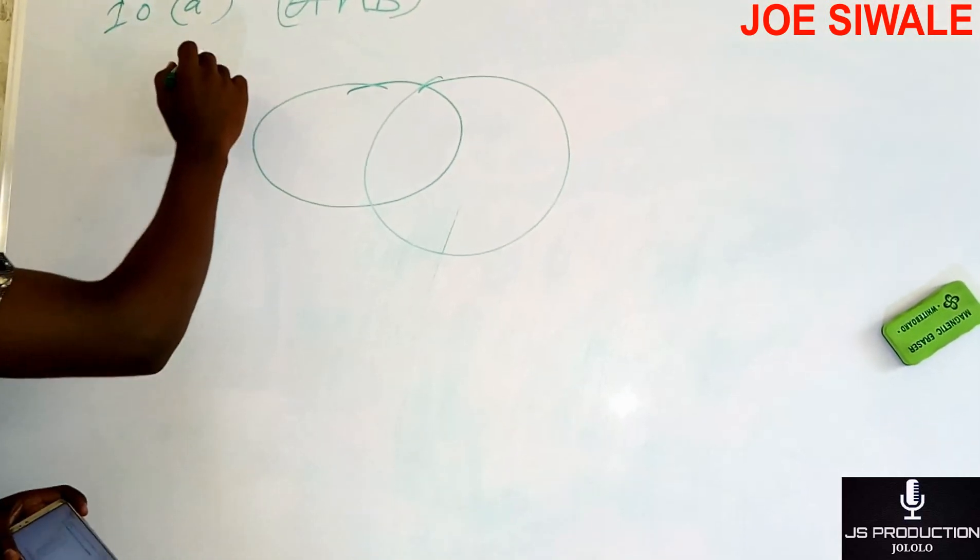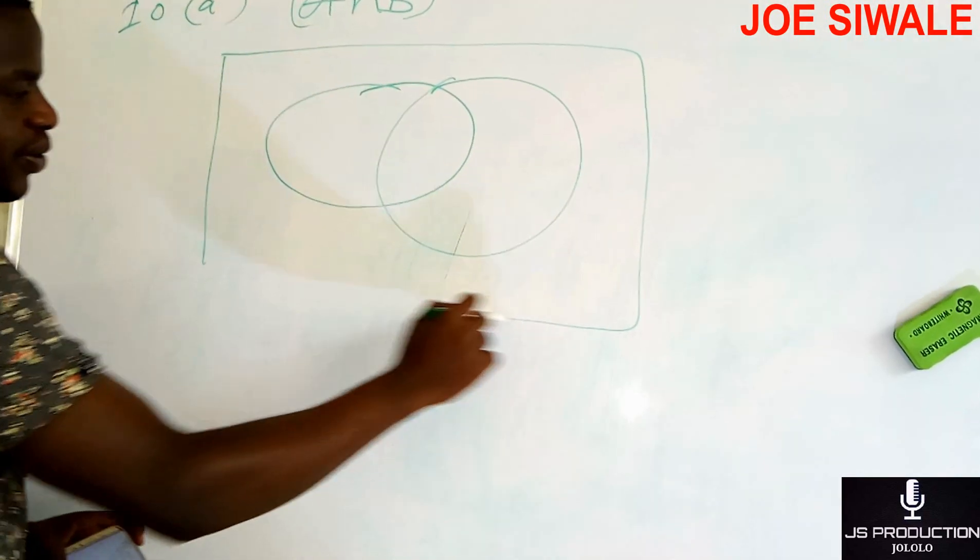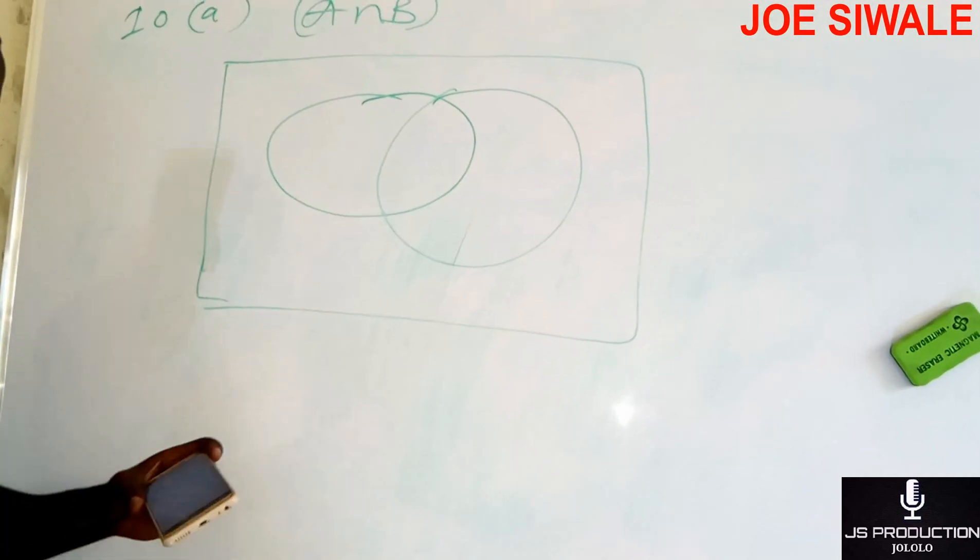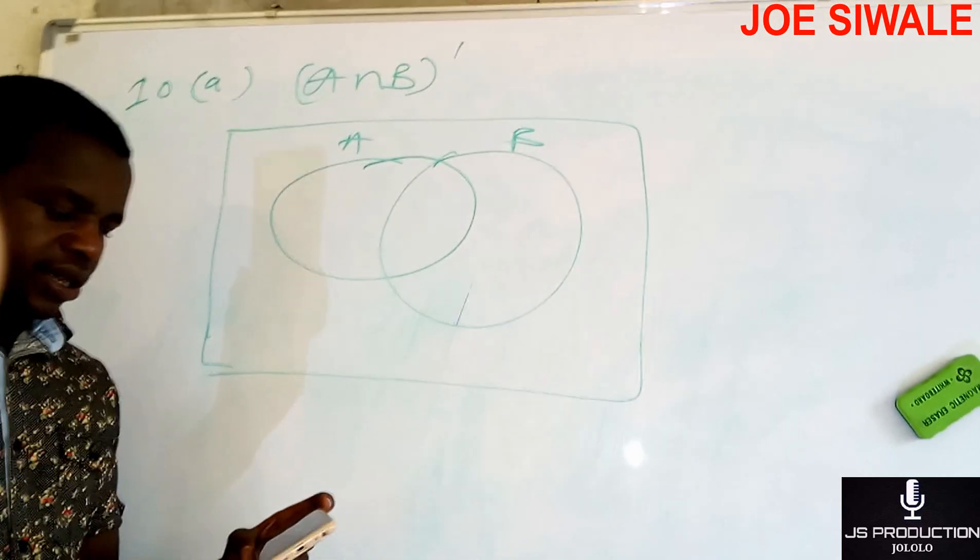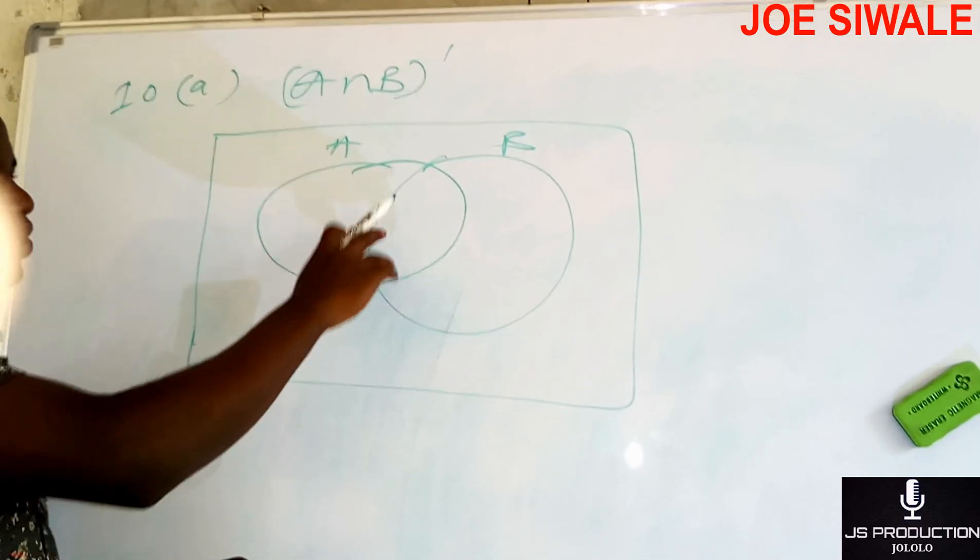I have set A and set B. I also have the universal set. So this is my set A and this is my set B. And my intersection set, which is in the middle,